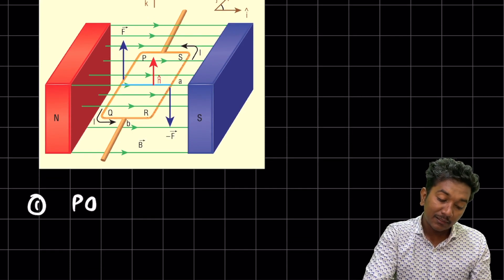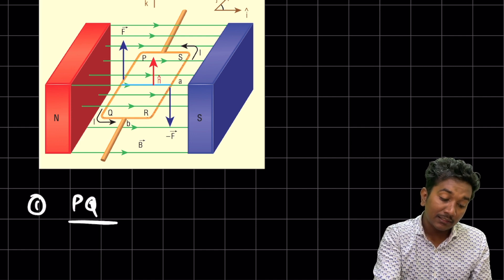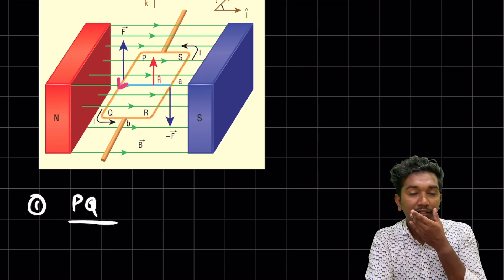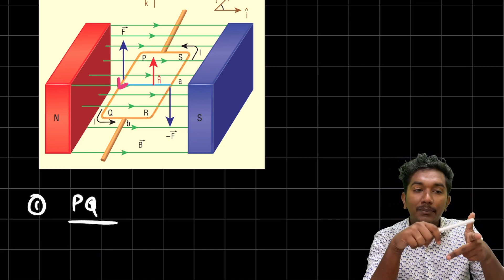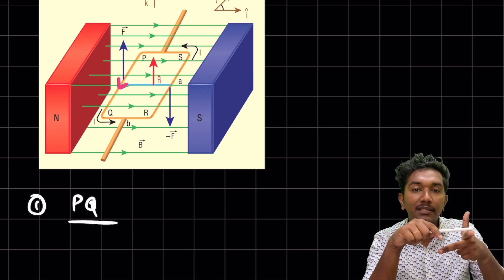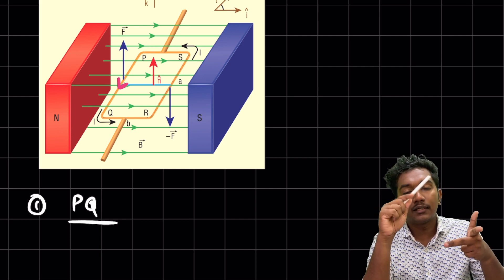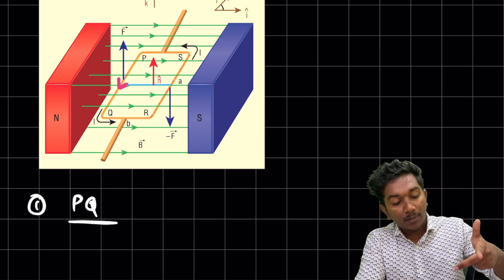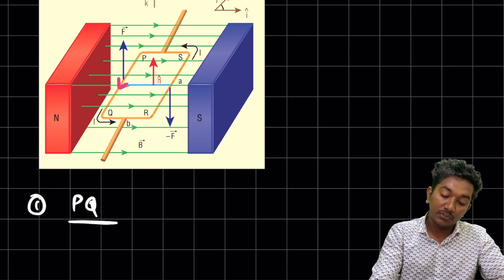In conductor PQ, the length is in one direction and the current is in another direction. The magnetic field direction is also given. To find the force direction, we apply Fleming's left-hand rule. I always tell you FBI — Force, magnetic field B, and I for current. You can remember it like the Federal Bureau of Investigation.